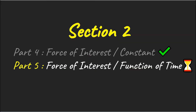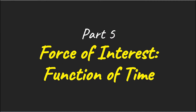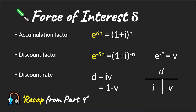Hi everyone. In today's video we'll be looking at the force of interest where it is a function of time. We've previously seen in my previous video where the force of interest was constant — if you haven't seen this video have a look in the description below or at the link above. When the force of interest is constant we get the following accumulation factors and discount factors, which help us work out the present values or future values of payments.